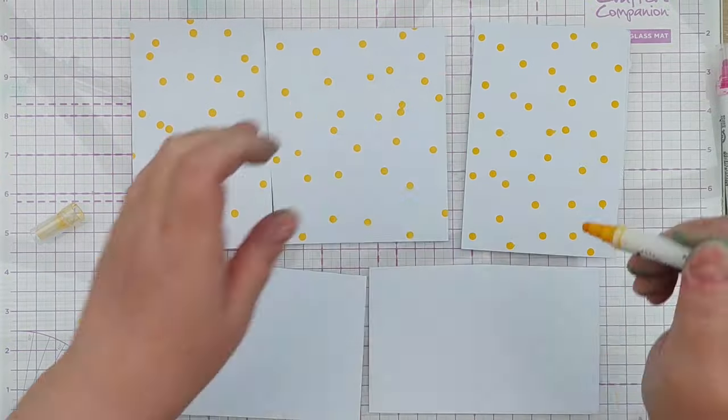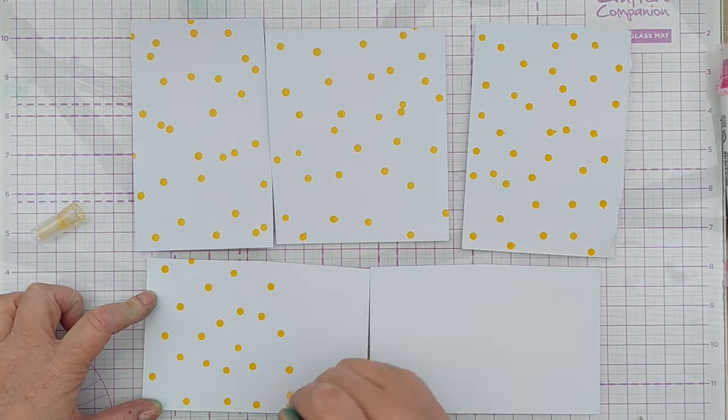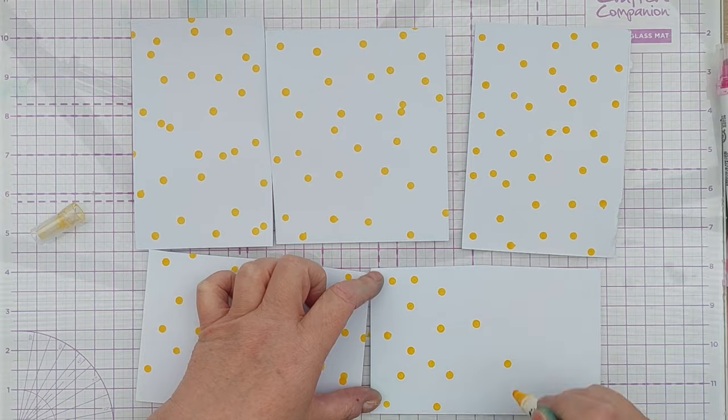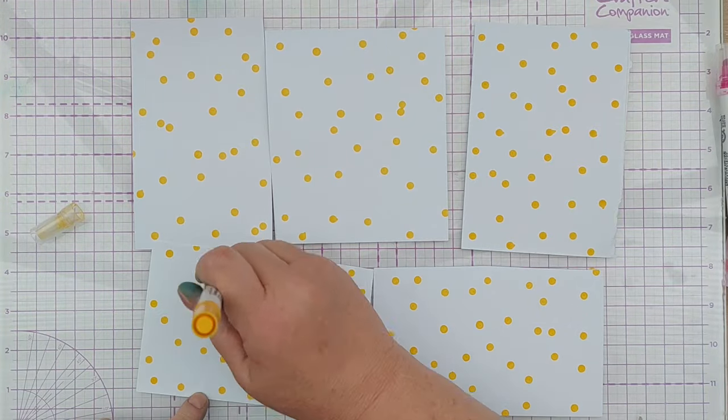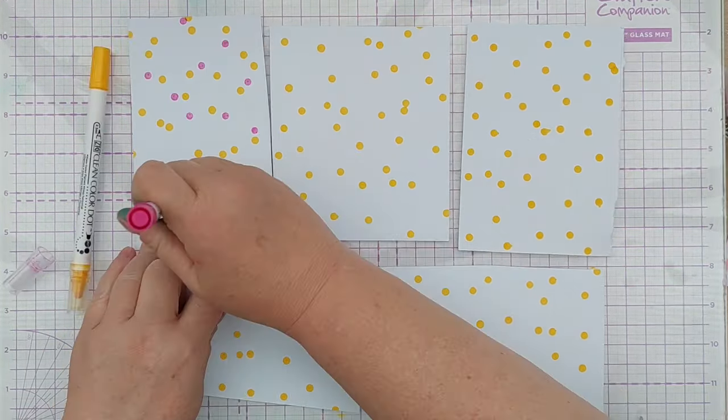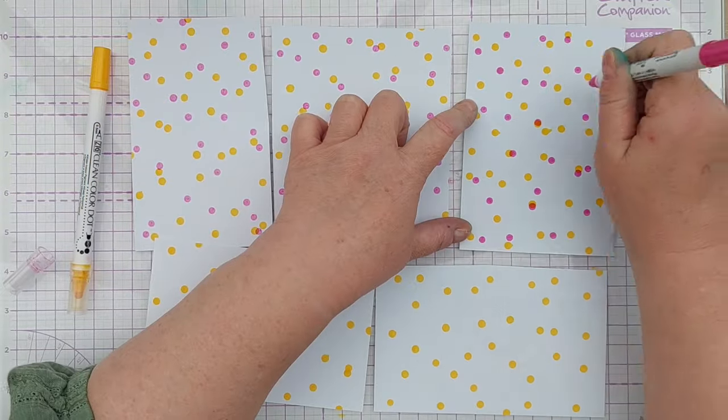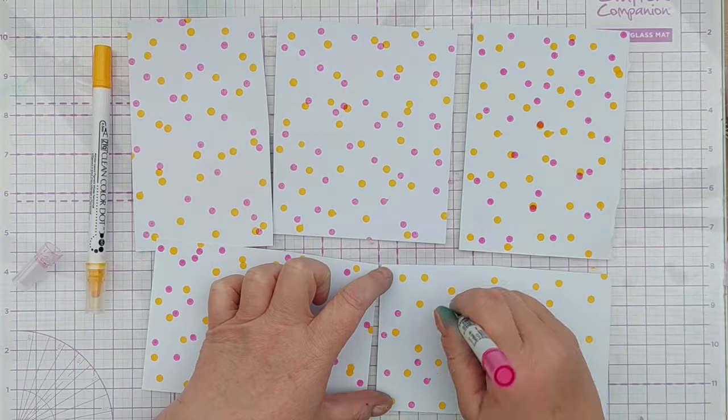I've gone for an analogous color scheme - yellows, pinks and reds - so that when my dots overlap, as they invariably will do, they won't make mud. They'll just make a variation of pinks, reds and oranges.